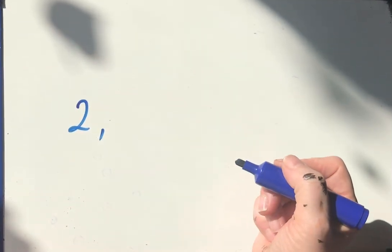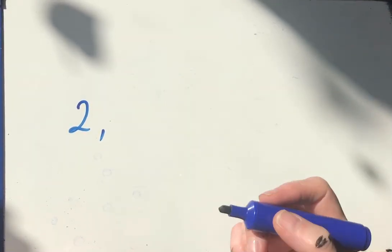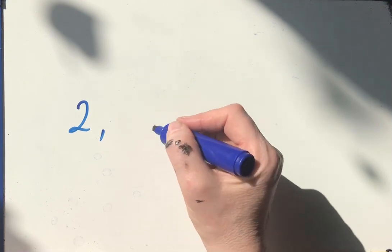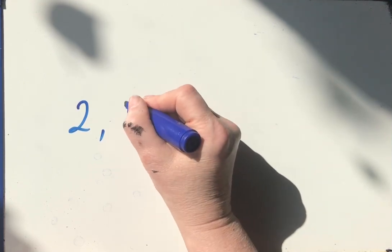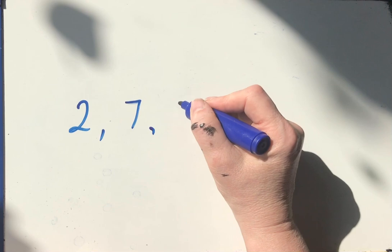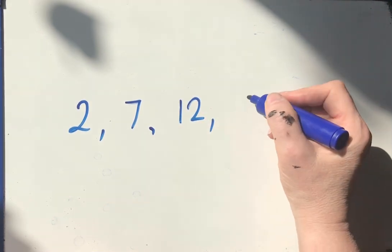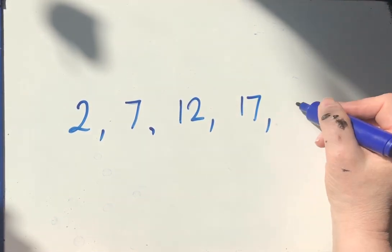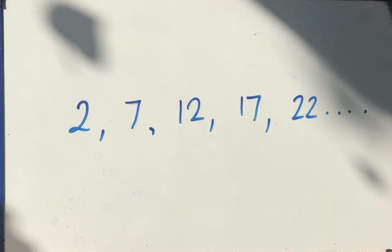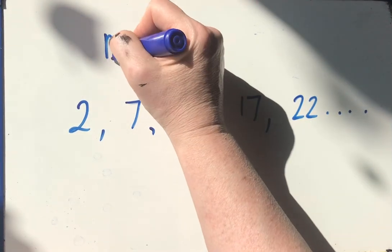As soon as I write down the second number, because we're in the context of doing a linear sequence, you'll probably be able to guess straight away what I'm adding on each time and which times table it's related to. 12 plus 5 is 17 and so on. So I want to know the nth term.